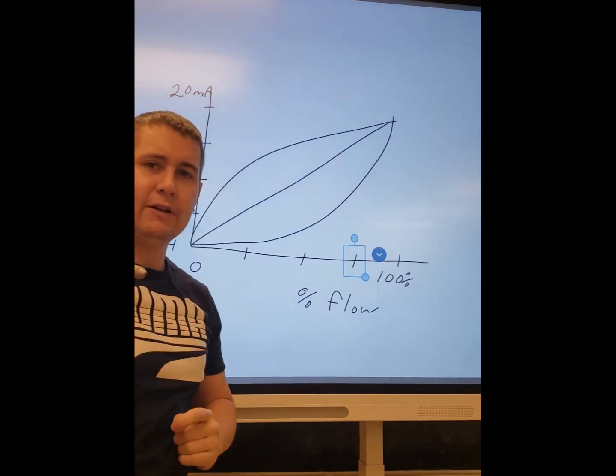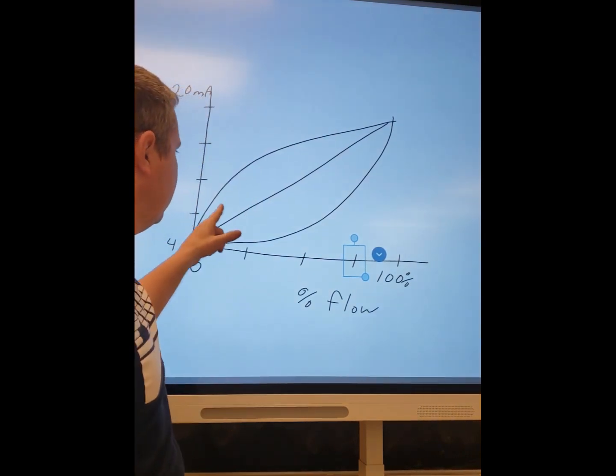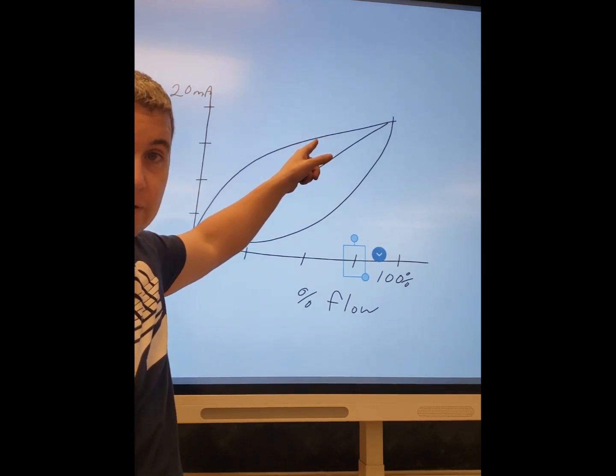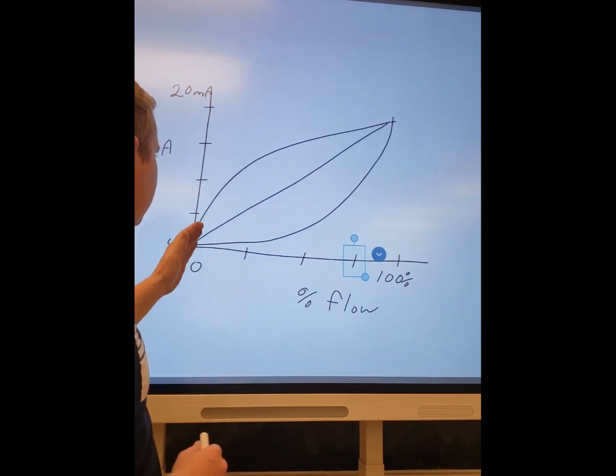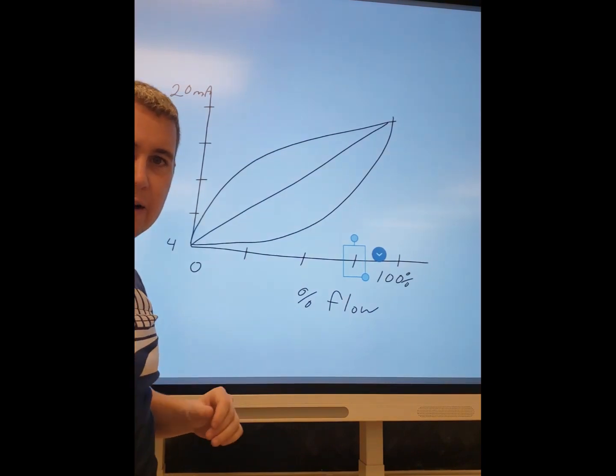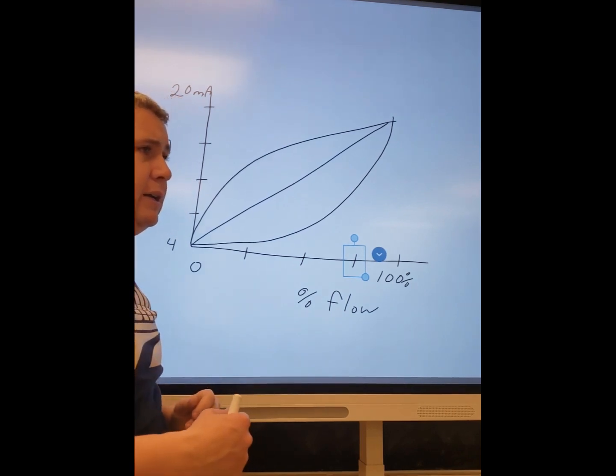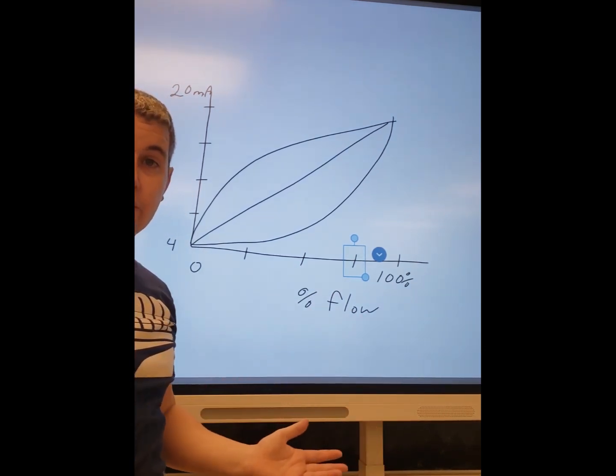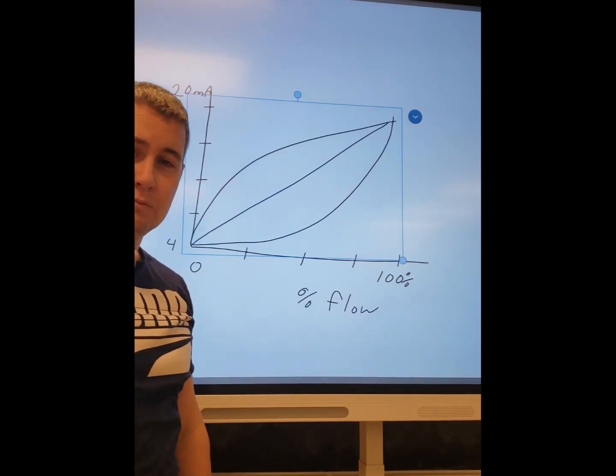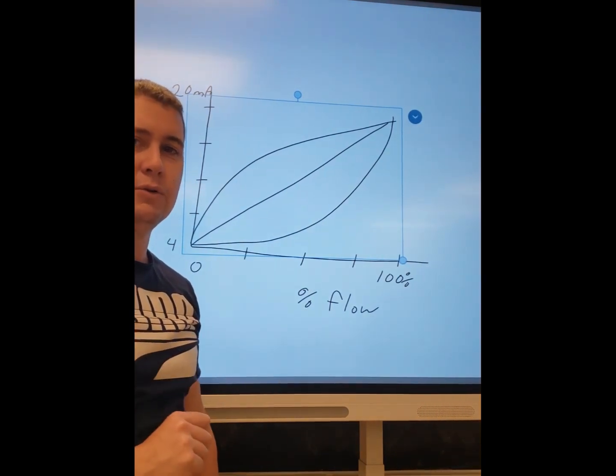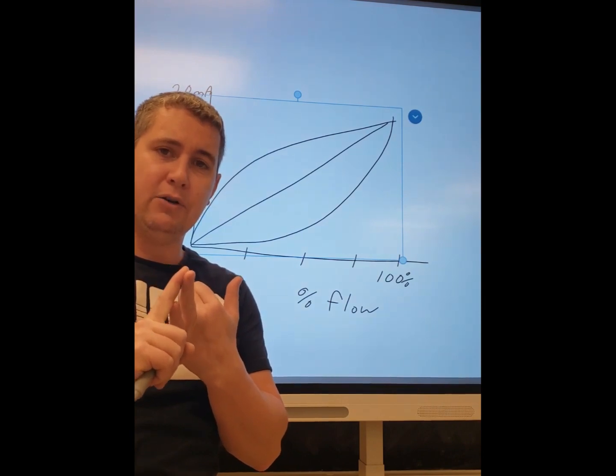Now why is this important? Because if you leave a transmitter in a square root function and you actually have a linear input like level, you will end up getting a square rooted output. So if you go to look at the level of a tank and you see that your output has this wild curve on it, you know that your square root extractor function on the transmitter is on. If you're doing flow like differential flow and you get this curve as your output, you know that you have your linear function on and you need to square root it. When you're doing flow you need to square root, when you are doing level you need to keep your output on a linear function.